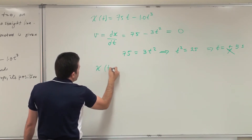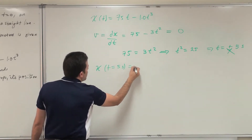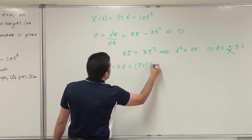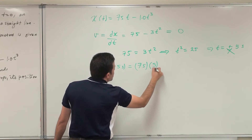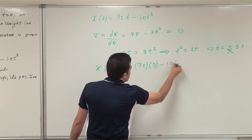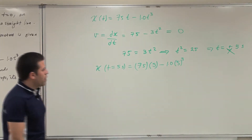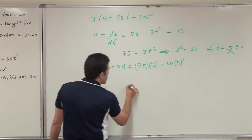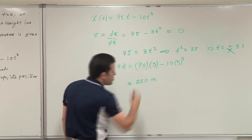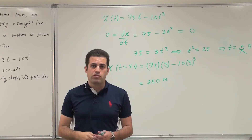So then I substitute in the coordinates at time equal 5 seconds. x at t equals 5 seconds should equal 75 multiplied by 5 minus 1 times 5 cubed. This will give 250 meters, which is the coordinate of the particle when it momentarily stops.